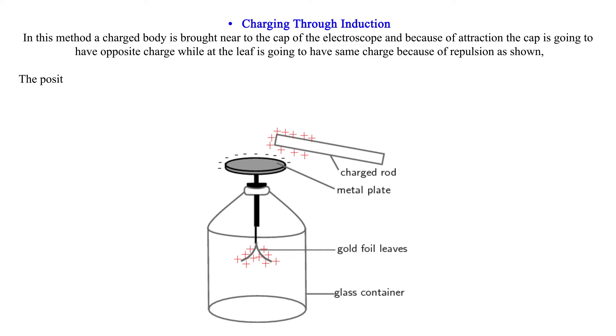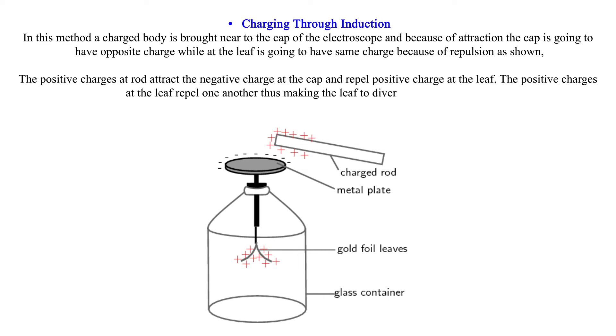The positive charges on the rod attract the negative charge at the cap and repel positive charge at the leaf. The positive charges at the leaf repel one another, thus making the leaf diverge through an angle.